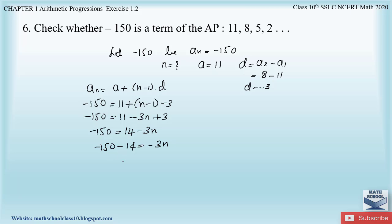Adding -150 and -14 gives -164 = -3n, so n = -164 / -3 = 164/3. We cannot simplify further as 164 is not divisible by 3. So the n value we found is a fraction. One important thing to observe is that the n value can never be a fraction or a negative number — it should always be a positive counting number.